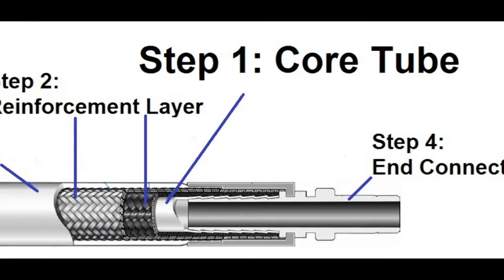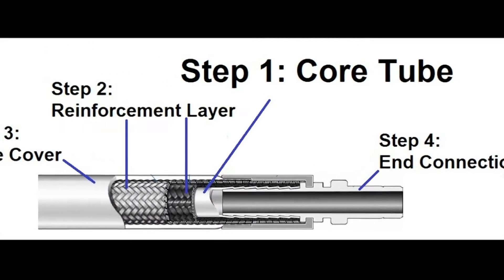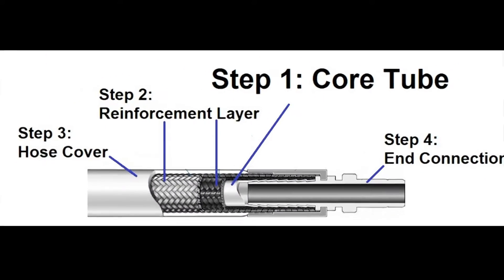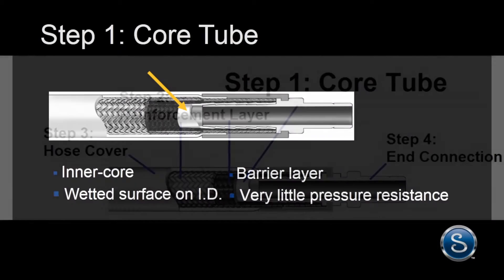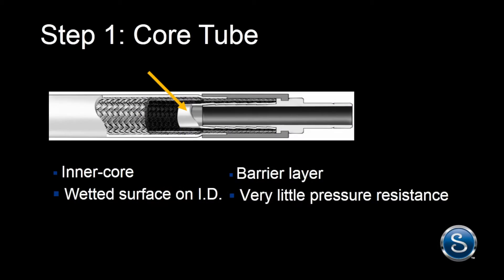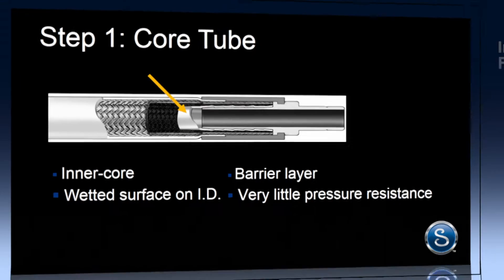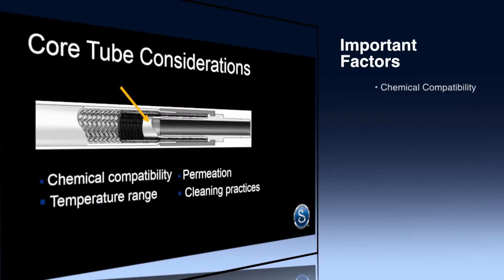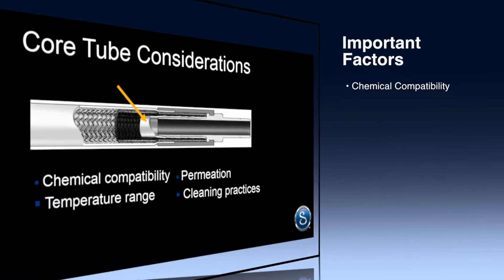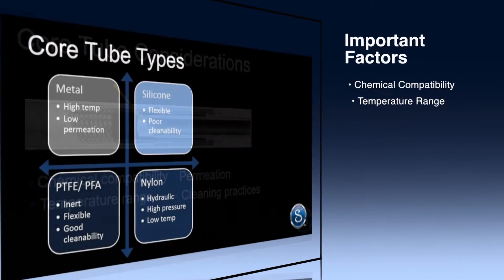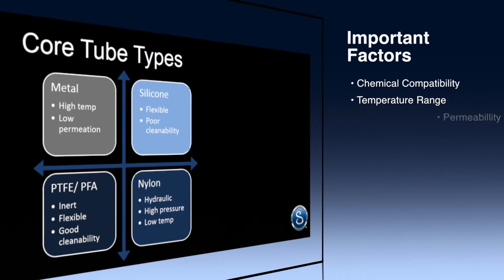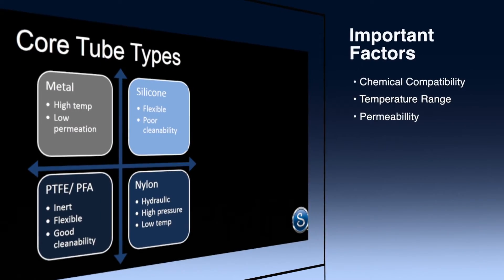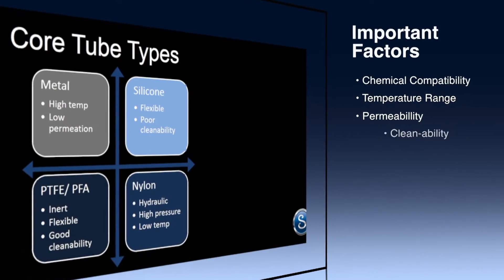Step one: select the hose core tube material. This is the wetted inner core of the hose that provides media containment. Consider these important factors: chemical compatibility, temperature range, permeability, and cleanability.